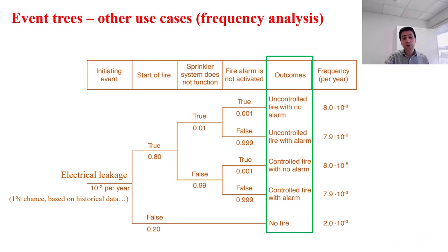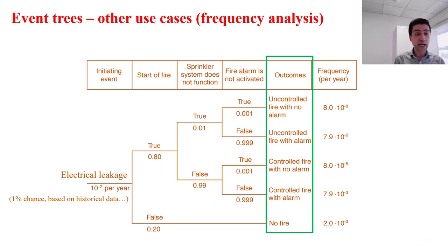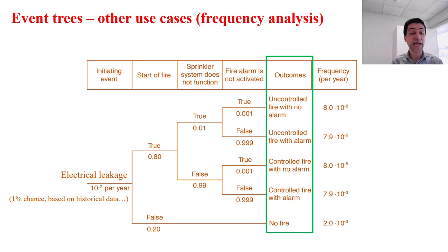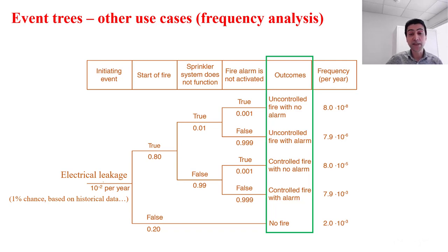Event trees are also frequently used for frequency analysis. The initiating event in this example is electrical leakage, which has a 1% chance per year. Other intermediate events with associated probabilities are listed, and at the right-hand side of the tree, frequencies per year are calculated.